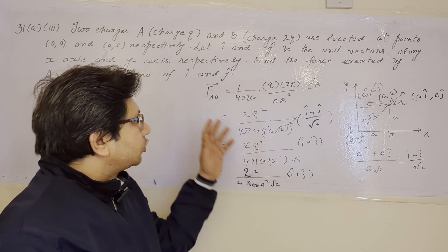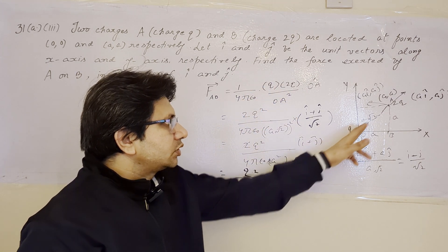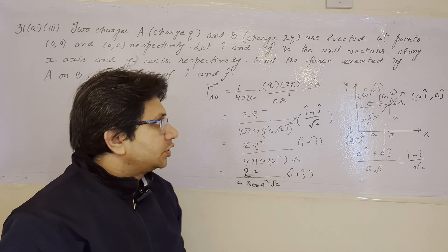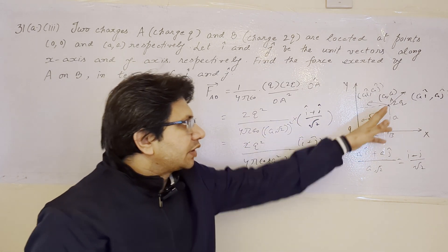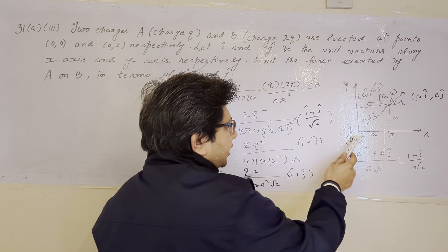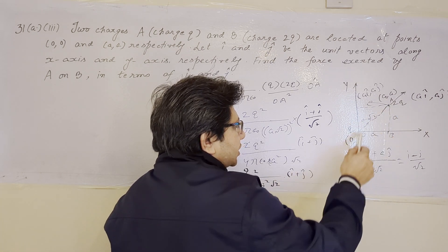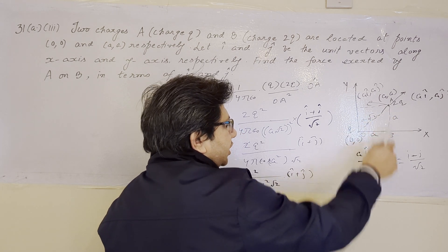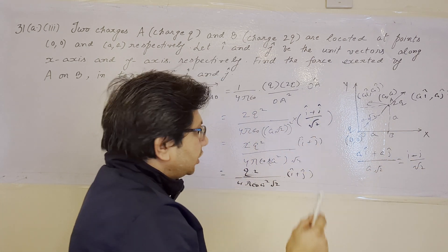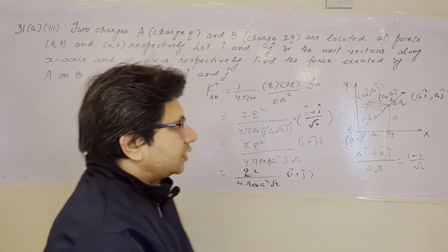Recapping in Hindi: We need help from Coulomb's law in vector form. The formula is F = (1/4πε₀) × q₁q₂/r₁₂² × r̂₁₂. We must find unit vector OA cap by dividing vector OA by its magnitude. Vector OA = aî + aĵ, magnitude = a√2. Dividing gives unit vector (î + ĵ)/√2. The final expression is q²/(4πε₀ a² √2) × (î + ĵ).